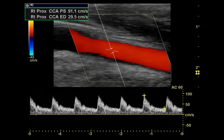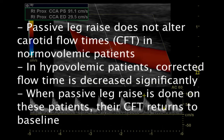They measured peak velocity, systole time, and carotid flow time with patients supine before and after a 30-second passive leg raise, then had patients give their donations and repeated the process. They found a significant difference in supine corrected flow times before and after donation — 320 ms versus 296 ms with a p-value of less than 0.0001 — as well as between supine and passive leg raise following donation, 296 ms versus 321 ms. This demonstrated that passive leg raise does not significantly alter carotid flow times in normovolemic patients, but flow time has significantly decreased in volume-depleted patients.